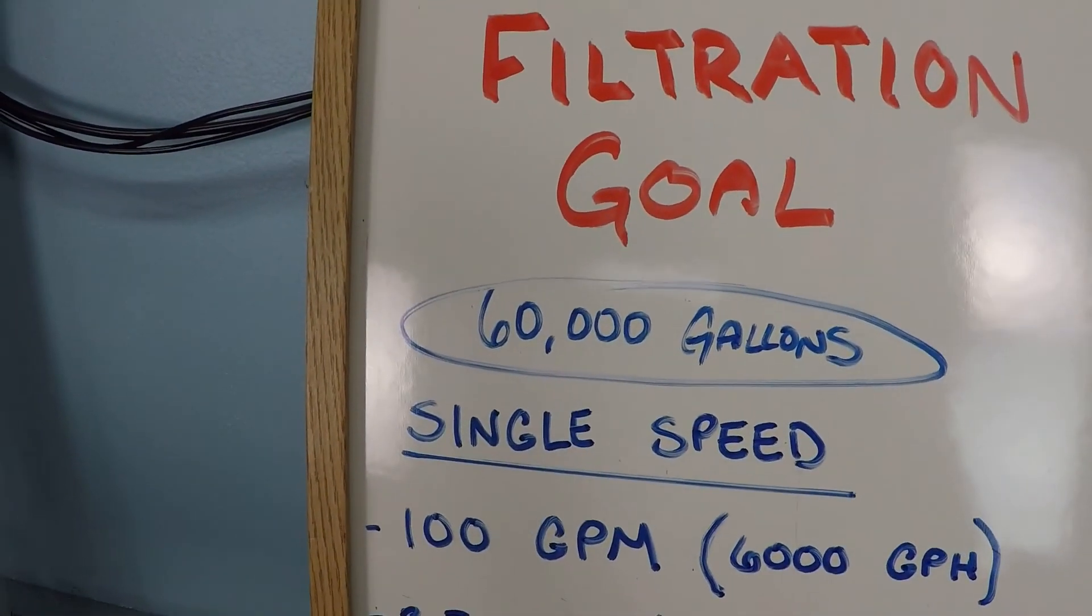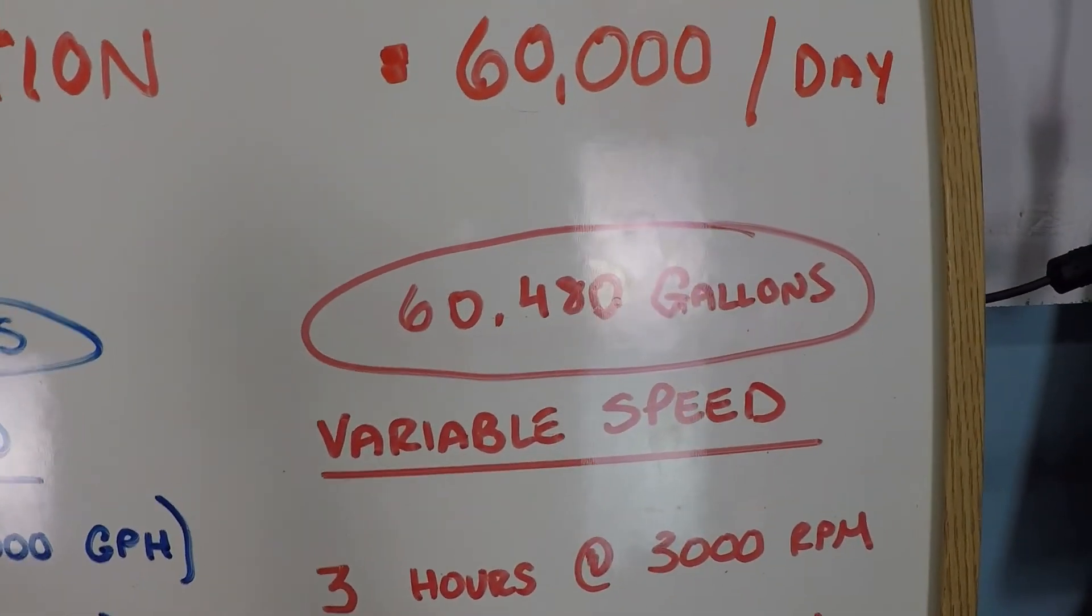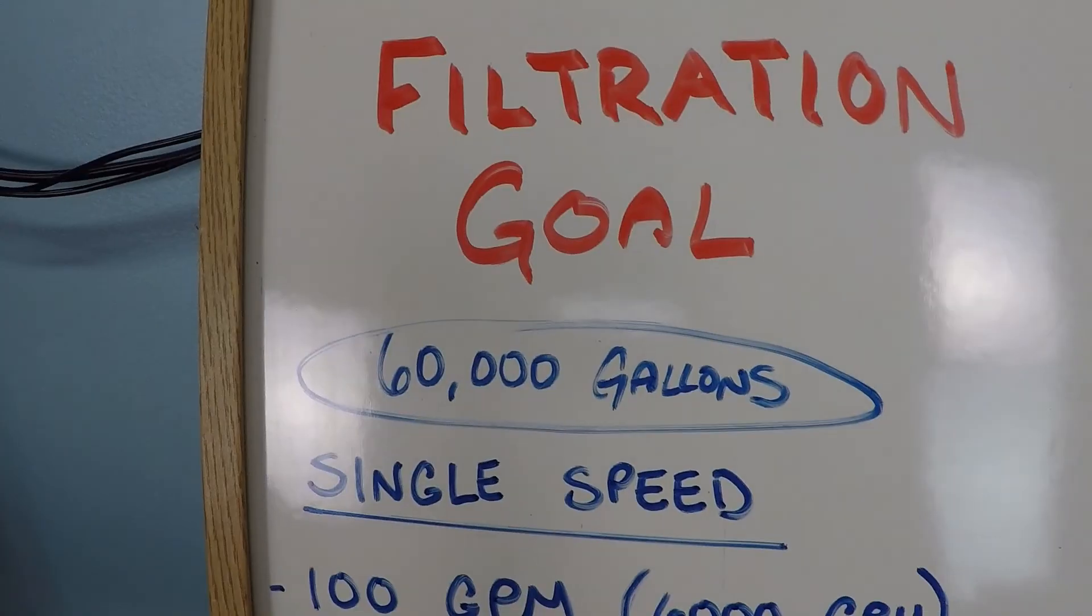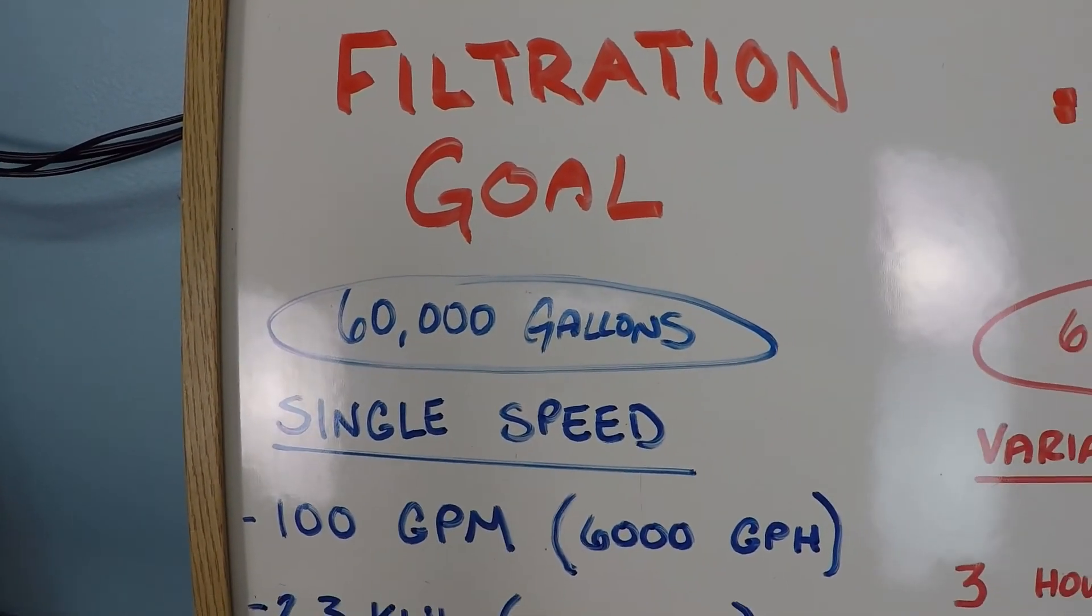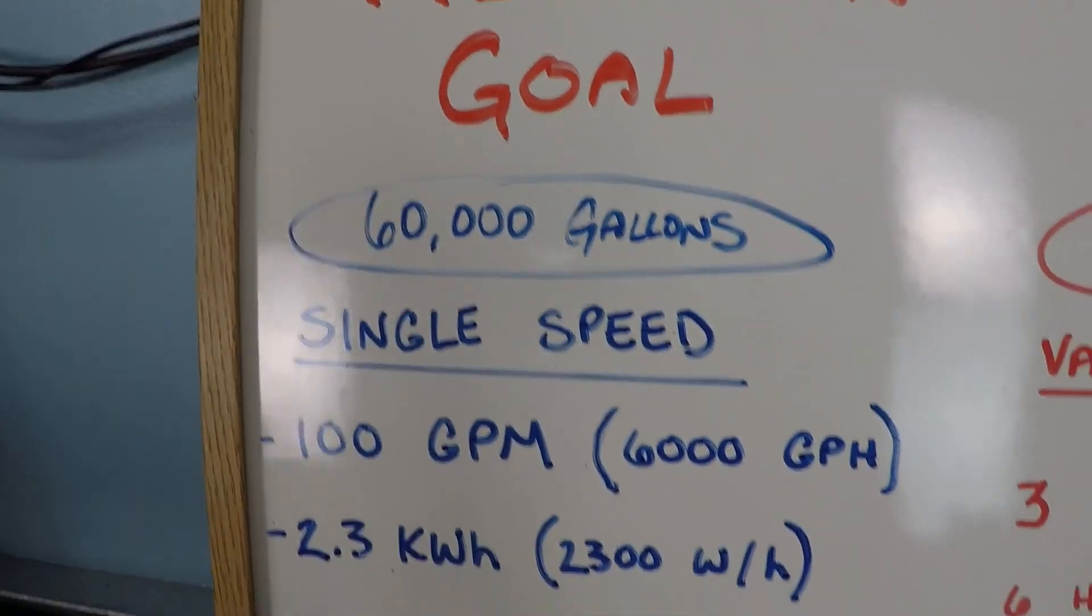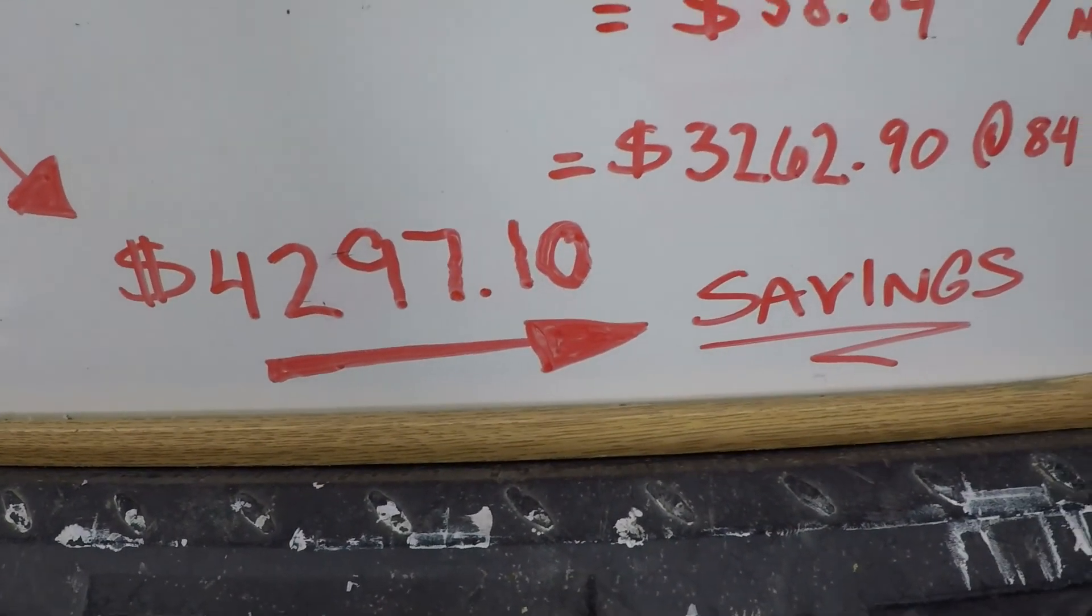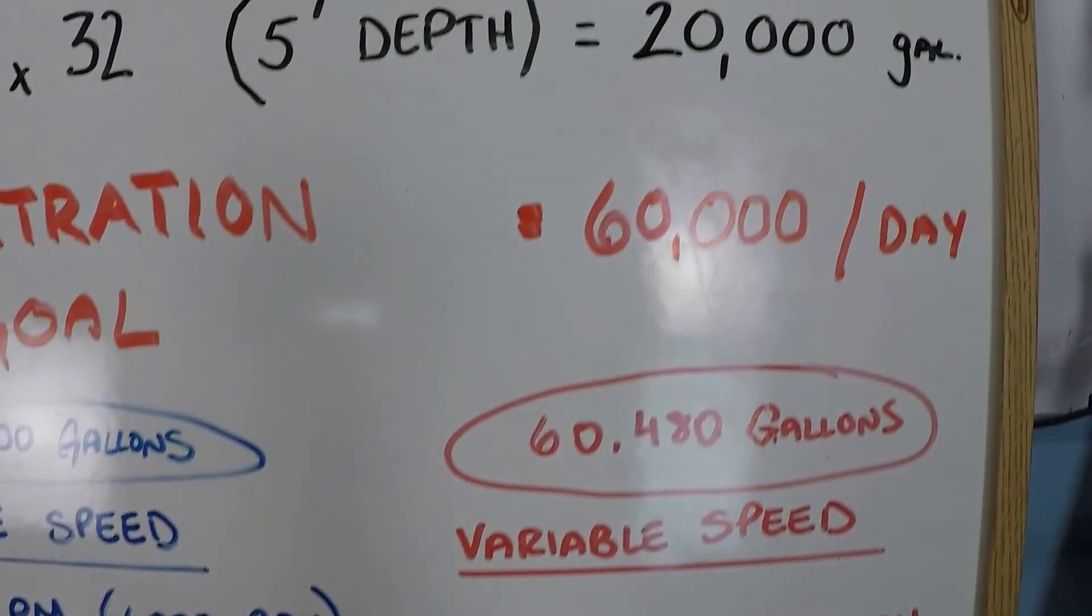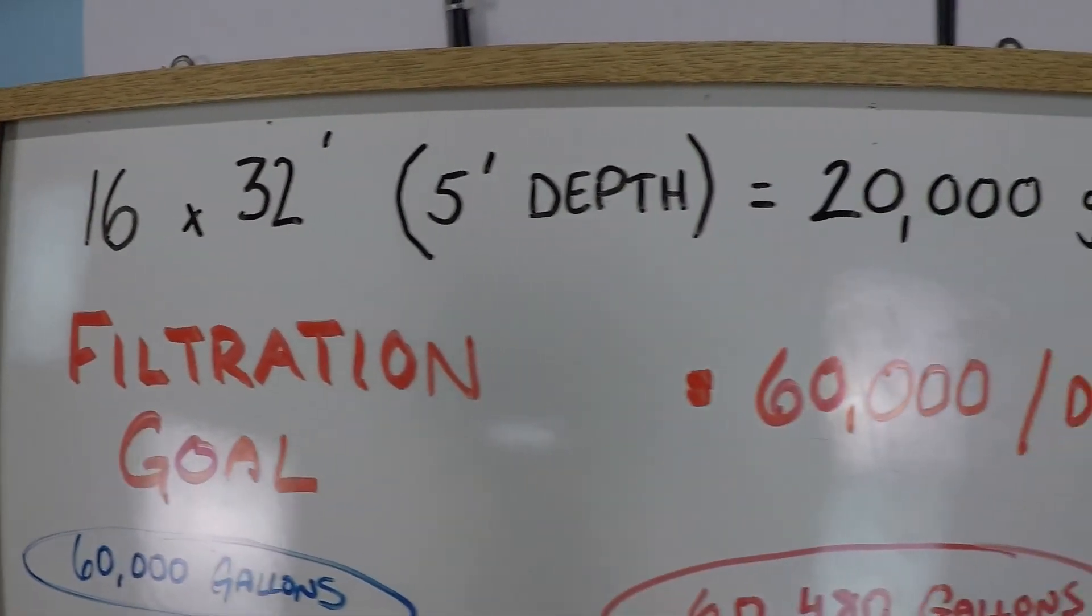When people compare variable speed pumps and single speed pumps, they often say that there's thousands of dollars of difference between them, but there's not. A typical variable speed pump might only be $500 more or at most $1,000 more than you would pay for a comparable single speed pump. But as you can see, you are easily going to be recouping that cost with your filtration schedule being three times the volume of your pool every day.